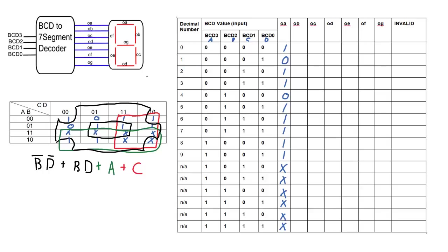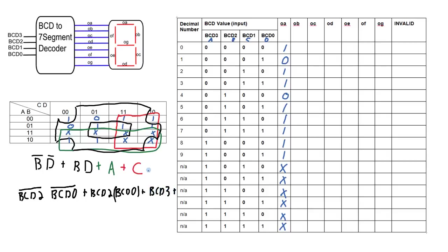Translating back from A, B, C, D to BCD3, 2, 1, 0: the full expression for OA is NOT BCD2 · NOT BCD0, OR BCD2 · BCD0, OR BCD3, OR BCD1. That is the logic expression for the signal going to segment OA of the seven segment display. To complete the full BCD to seven segment decoder, I need to repeat this process six more times for segments OB through OG, and optionally once more for the invalid signal. I hope you learned something in this video, and I'll see you in the next one.